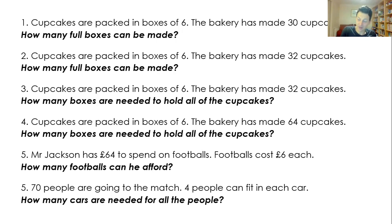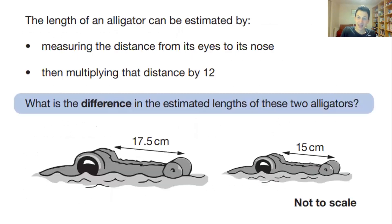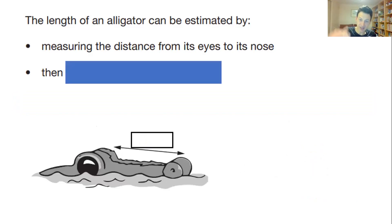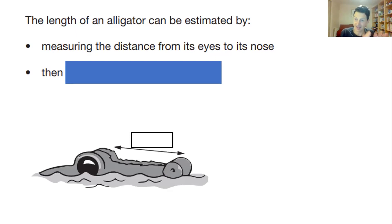I also want to help children break down multi-step questions like this one. I've seen so many times children come to a question like this and become overwhelmed with information, not knowing where to begin. The prompts will break it down and get children thinking about the structure. For example, the information will be revealed like this: 'The length of an alligator can be estimated by measuring the distance from its eyes to its nose.' We can then discuss what kind of relationship this is, and really explore why this is a multiplication context and not an addition context.